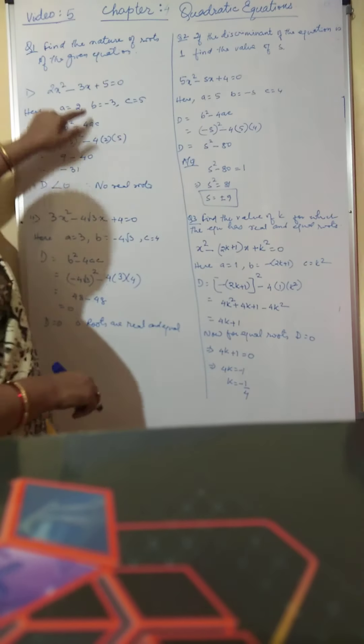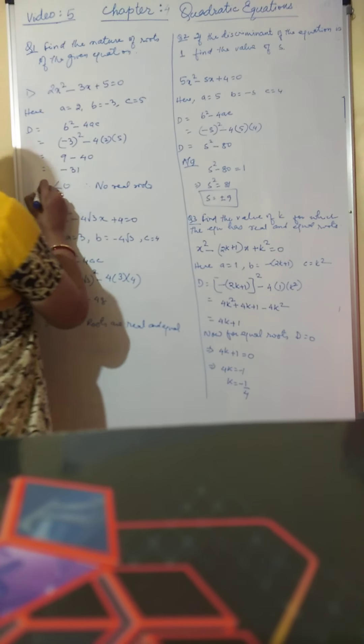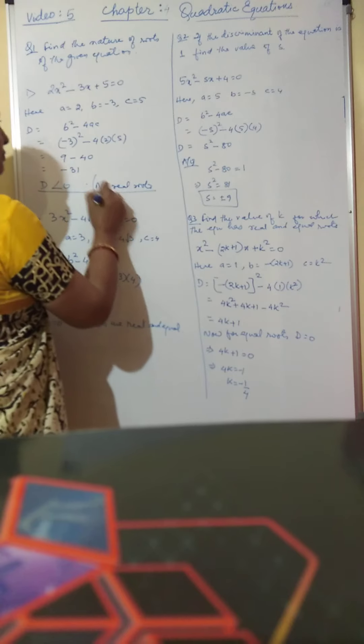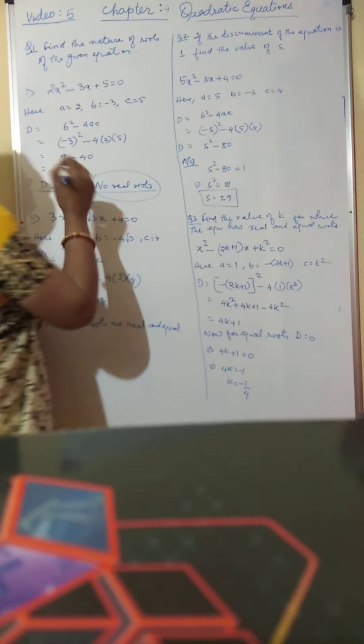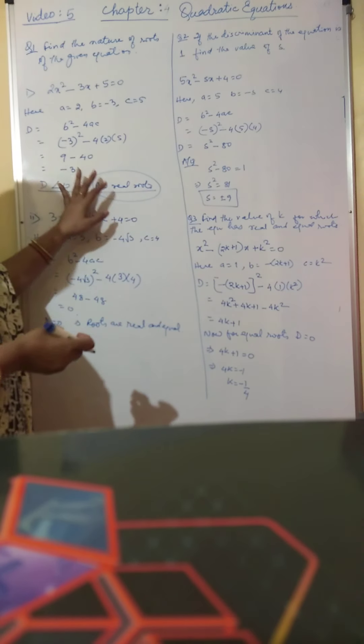Clearly we can see that minus 31 is less than 0. Therefore D is less than 0, which implies no real roots are possible for this particular equation. So that is its nature — D less than 0 means no real roots.